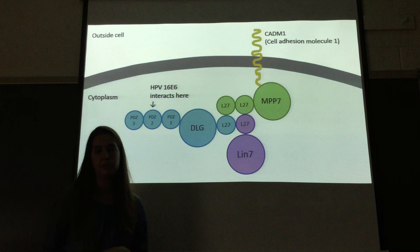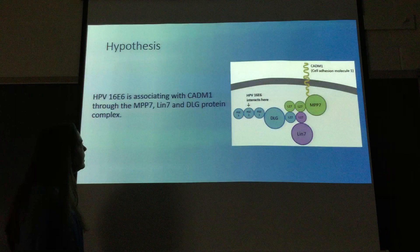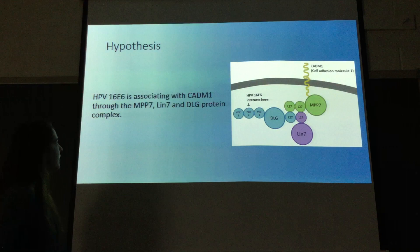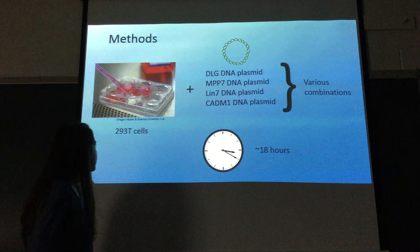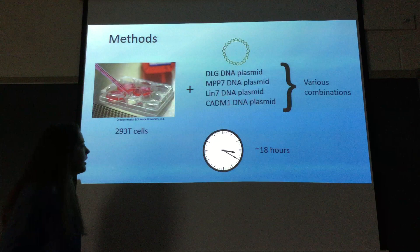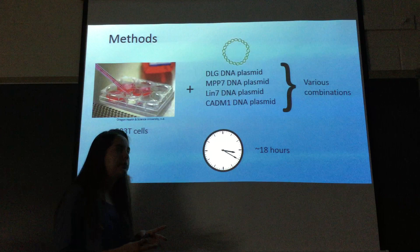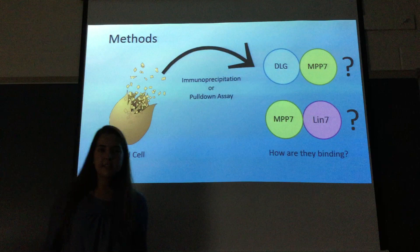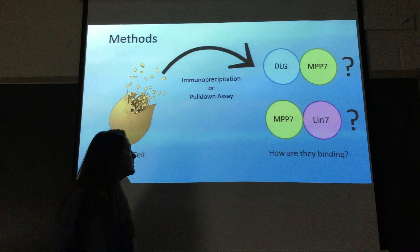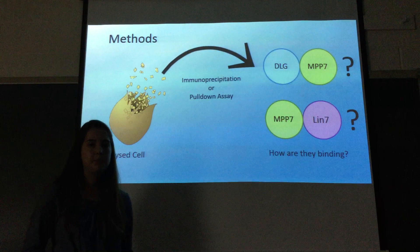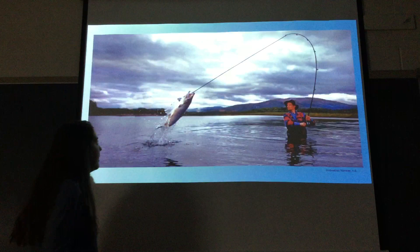Cell adhesion molecule 1 is a tumor suppressor, so my lab thought it made sense that HPV 16E6 — a high-risk type that can cause cancer — is binding a protein that ultimately binds a tumor suppressor. We think HPV is somehow modulating this tumor suppressor's function and causing cells to become cancerous. Our hypothesis was that HPV 16E6 associates with CATM1 through this complex. To test this, we transfected 293T cells with plasmids encoding the different proteins of interest, plated them in various combinations, and waited 18 hours for the cells to grow. We then lysed the cells and performed two types of assays: immunoprecipitation and a pull down assay.